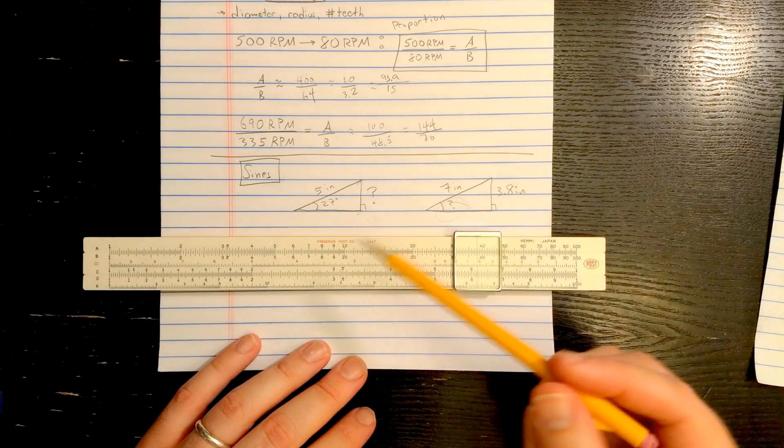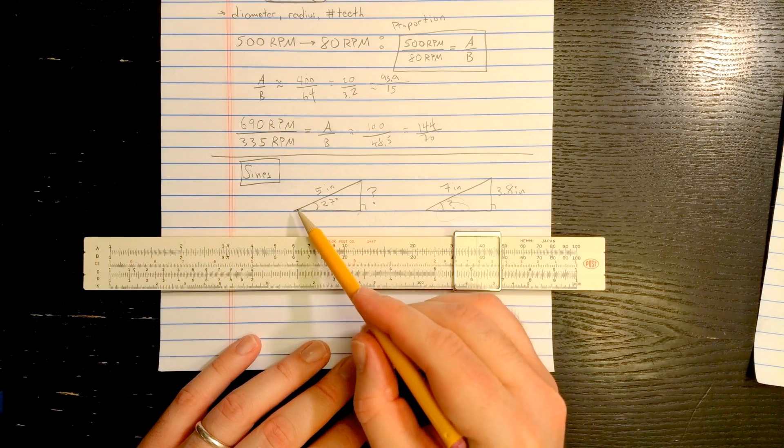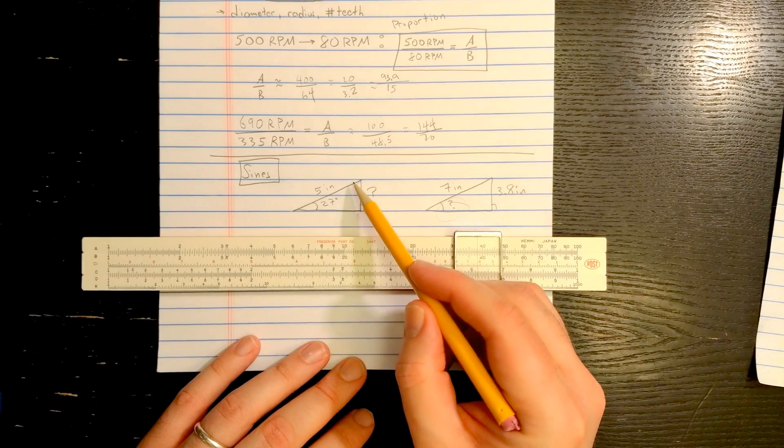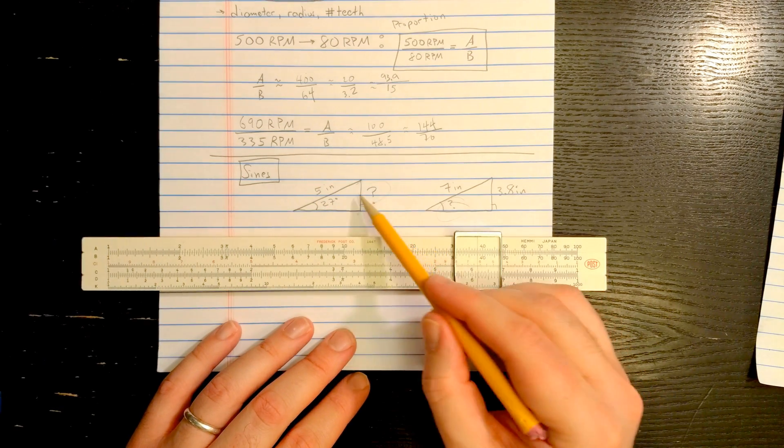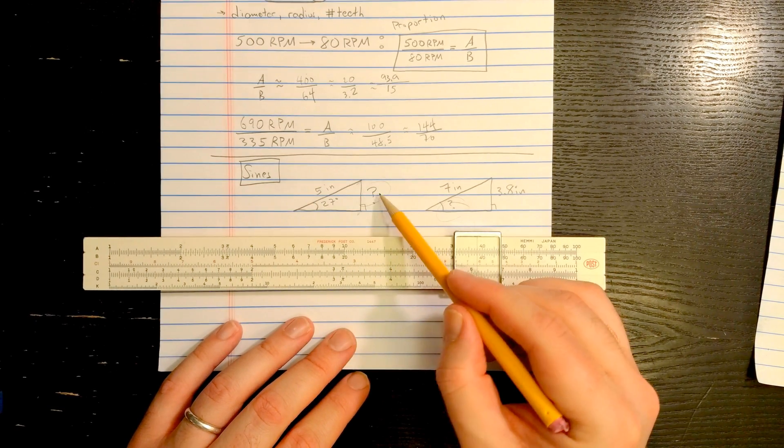So the question is, if you're setting up a sine bar, which is a fixed bar of a certain length, and you wanted to make a certain angle with the horizontal, what you want to know is how long you want to make this side across from the angle.